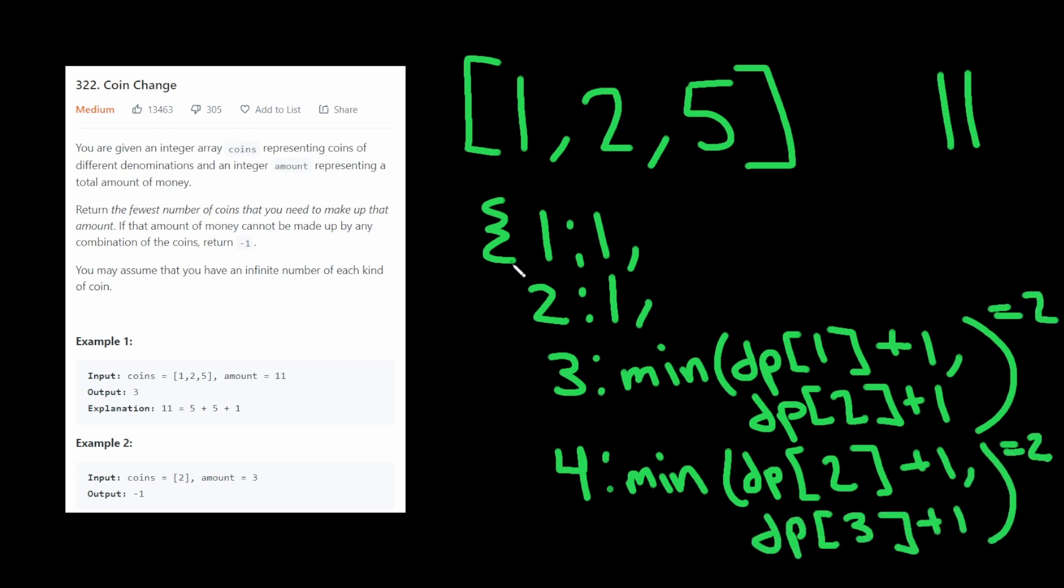So hopefully that makes sense. This is kind of the intuition behind it. And all we do is we just keep going until we reach the amount that we want, and we return that amount. This is an O of amount times coins length algorithm. And then in terms of space complexity, it's just O of amount.